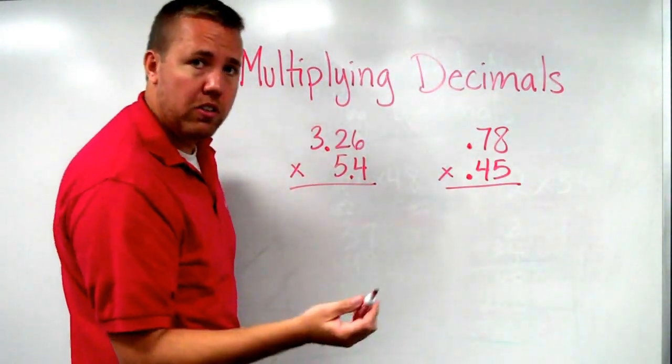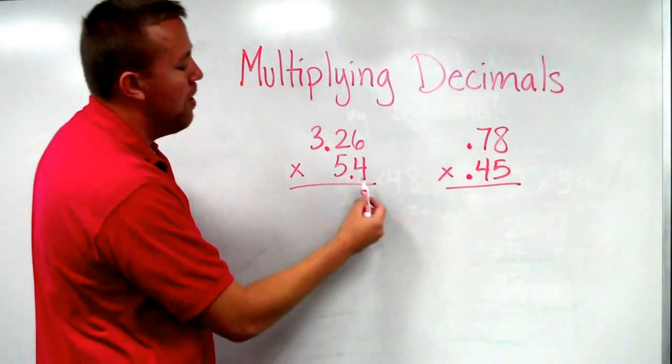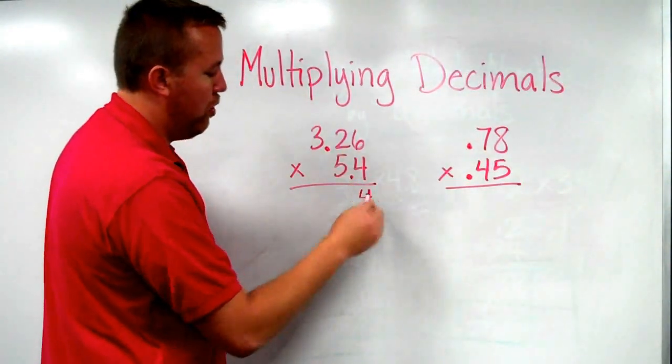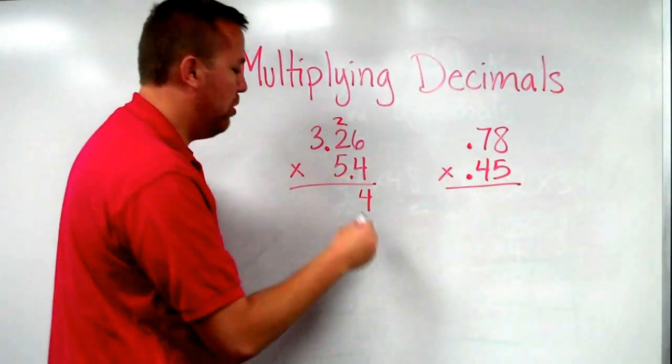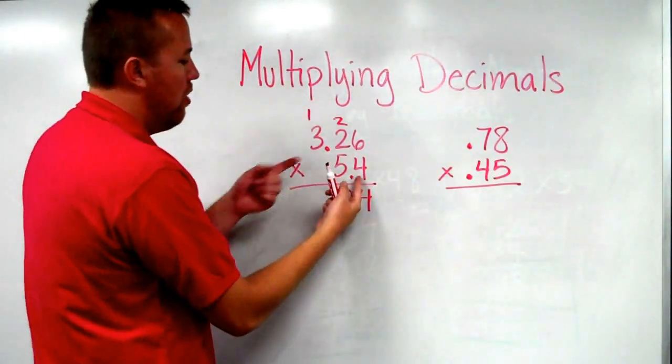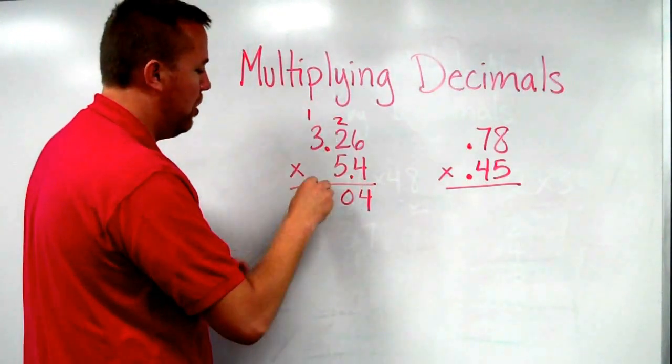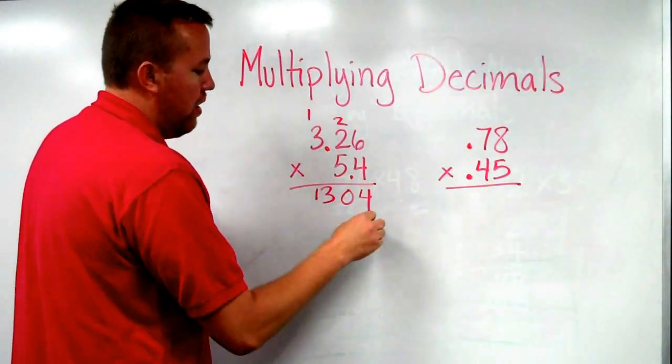We start in the same spot we always do when we do the multiplication algorithm. Four times six is 24. Put down the four. Carry the two. Four times two is eight. Eight plus two is ten. Zero down. Carry the one. Four times three is twelve. Plus one. Thirteen.